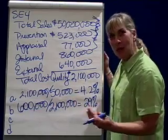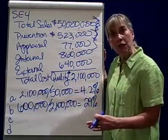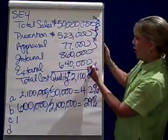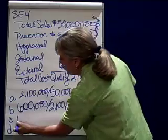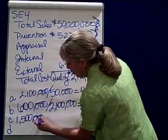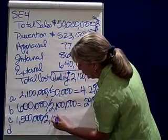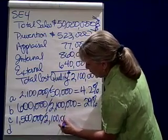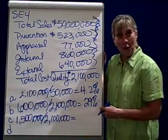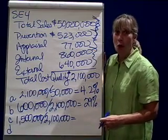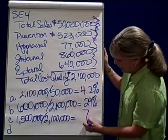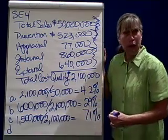In Part C, we look at the cost of non-conformance to the total cost of quality. The non-conformance costs come to $1.5 million. So $1.5 million divided by $2.1 million means this company is spending a whole lot more on fixing mistakes — that comes to 71%. Pretty bad.